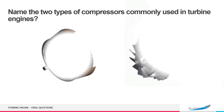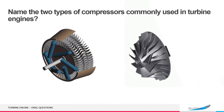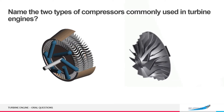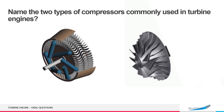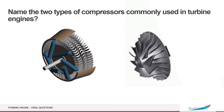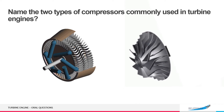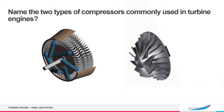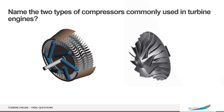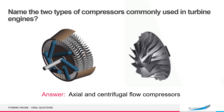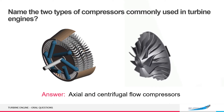Name the two types of compressors commonly used in turbine engines. Axial and centrifugal flow compressors.